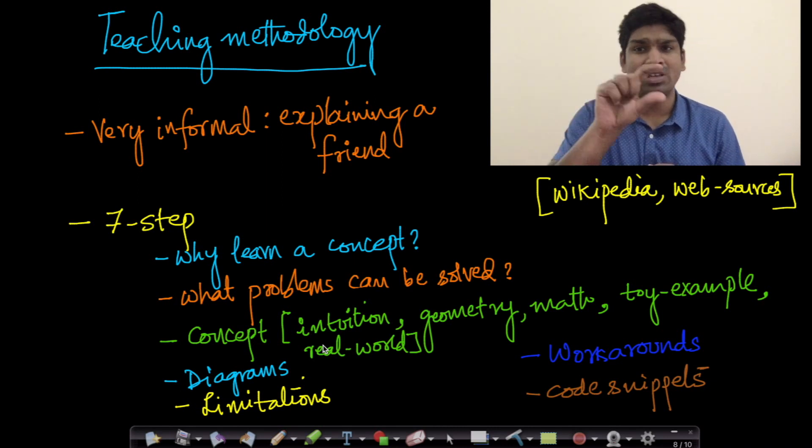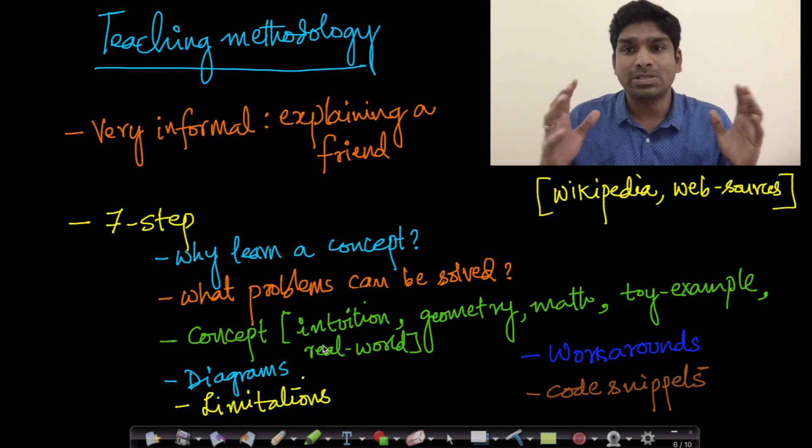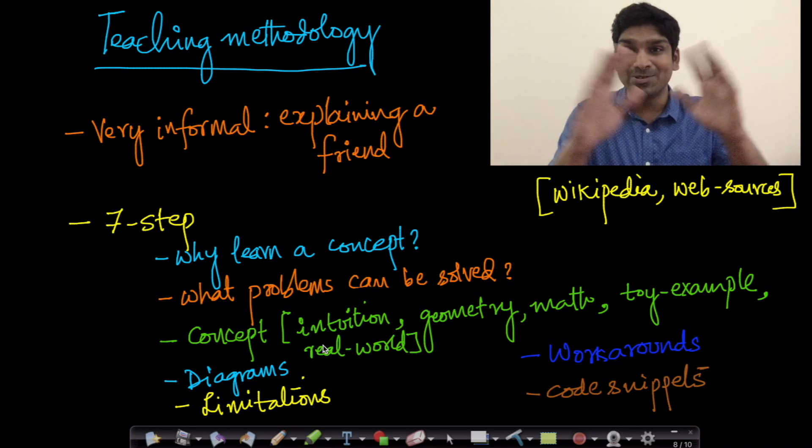For every concept, we give a simple code snippet, if it is relevant, so that you don't have to search the internet for code. A lot of times, we use publicly available sources on the internet. We use Wikipedia extensively in this course. So in addition to this black screen, you see IPython notebooks and Wikipedia pages.